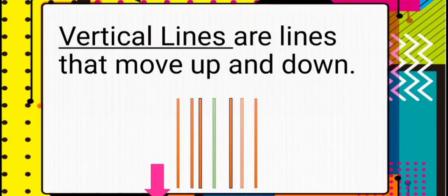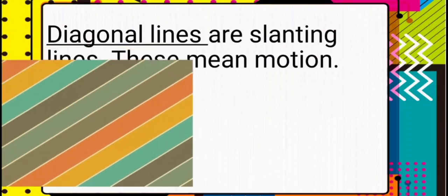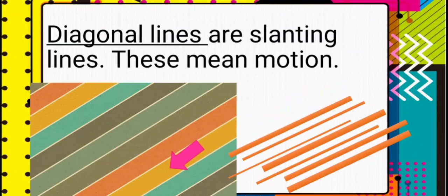Or it can be from down to up — it's up to you. Next are diagonal lines. Diagonal lines, also called slanting lines, represent motion. Here is our example of diagonal lines. You start moving from upper right to lower left, or it can be vice versa.